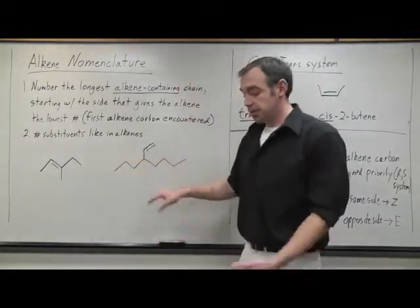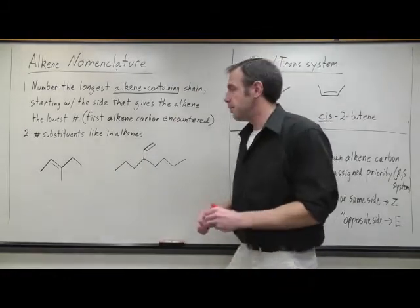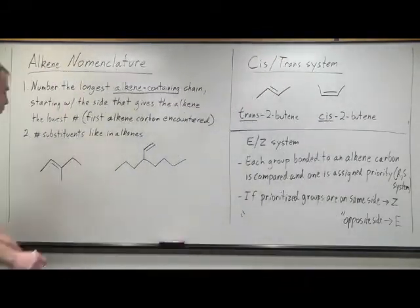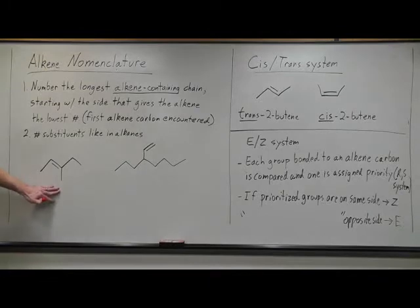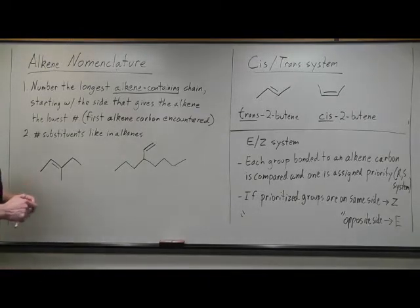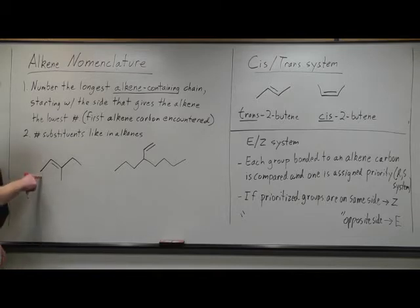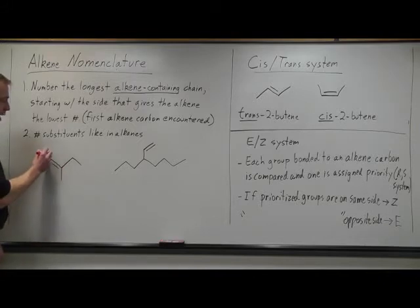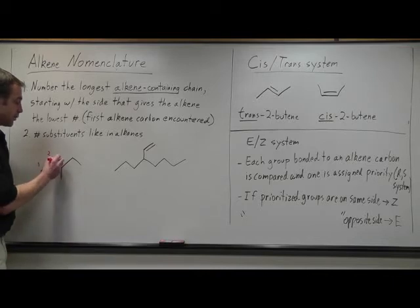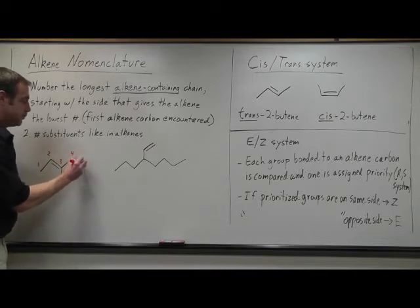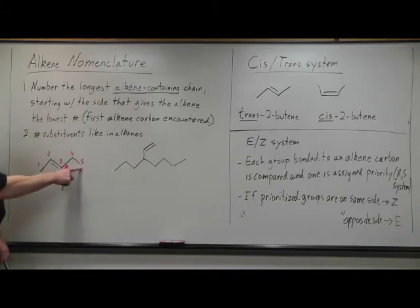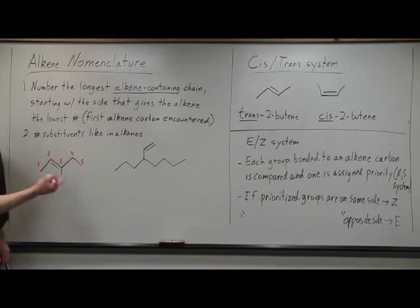For these first two examples, we can go ahead and name them. If we look at this example here, we're going to number our chain to give the alkene the lowest number. So the longest alkene-containing chain is one, two, three, four, five carbons. If we number from this side, we first encounter the alkene at carbon number two. If we had numbered from this side, we would have first encountered it at carbon number three.